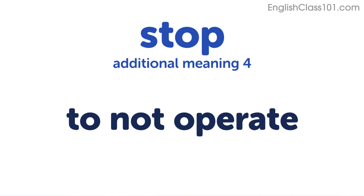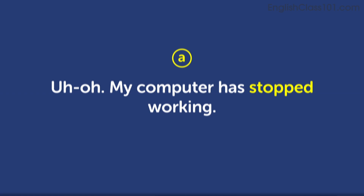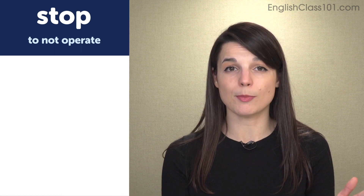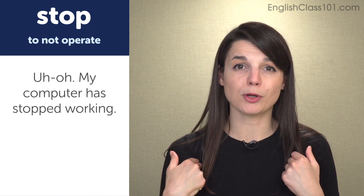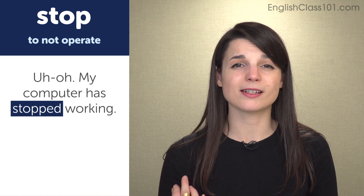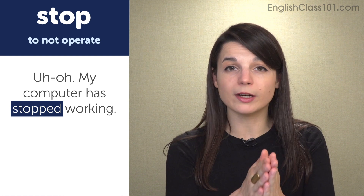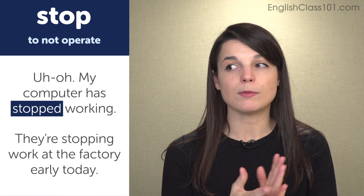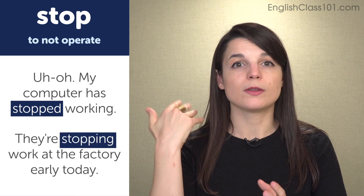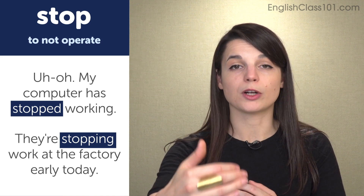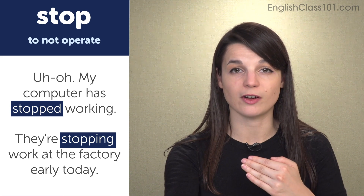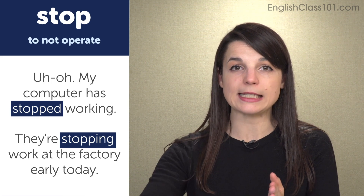The fourth meaning is to not operate. This is especially used for machines. Examples: "Uh-oh, my computer has stopped working." "They're stopping work at the factory early today." This means some operation is not happening — something is not operating or not continuing. "My computer has stopped working" means it was working, now it's not — it stopped, it is no longer operational. In the second sentence, using the progressive form, "they're stopping work at the factory early today" means there's a plan to stop work early. We use the progressive form to refer to a determined plan decided prior to the conversation. That means operations will cease.